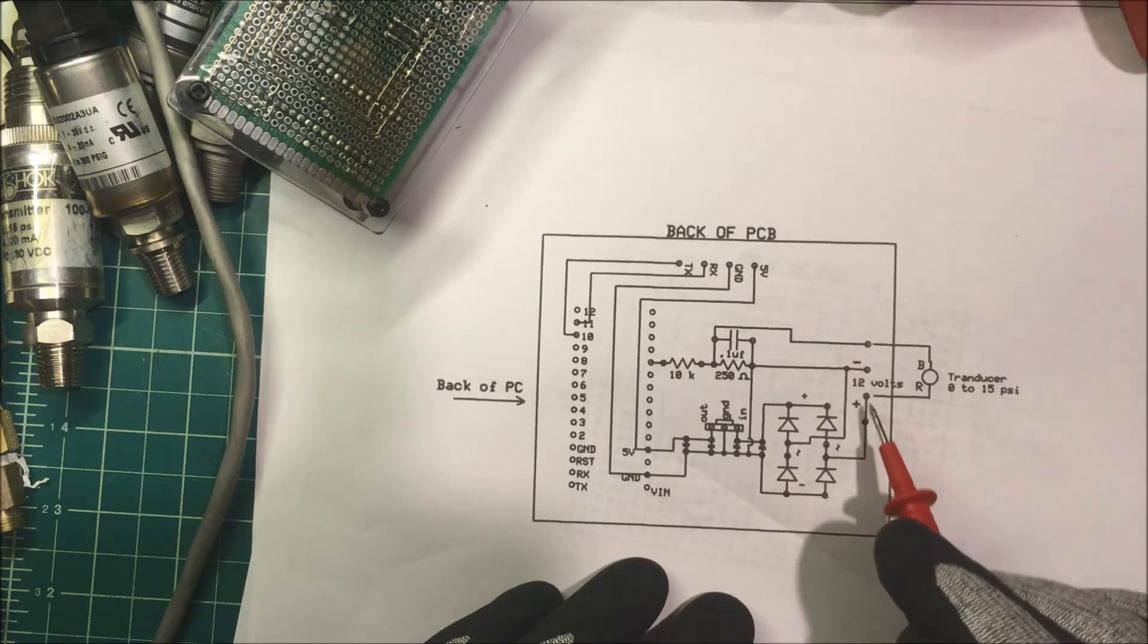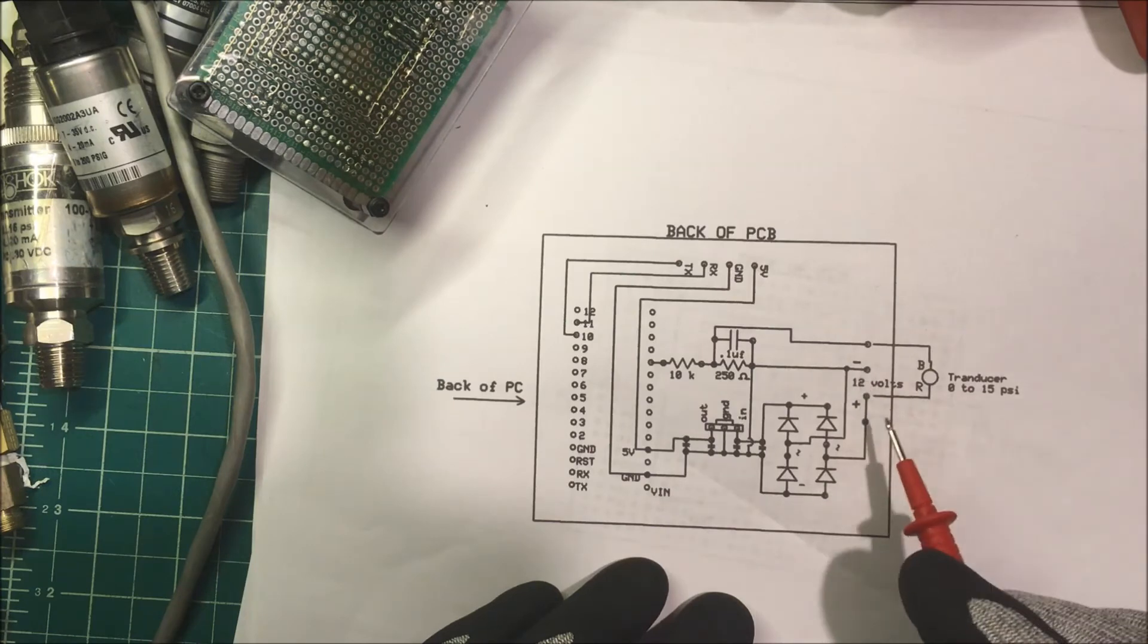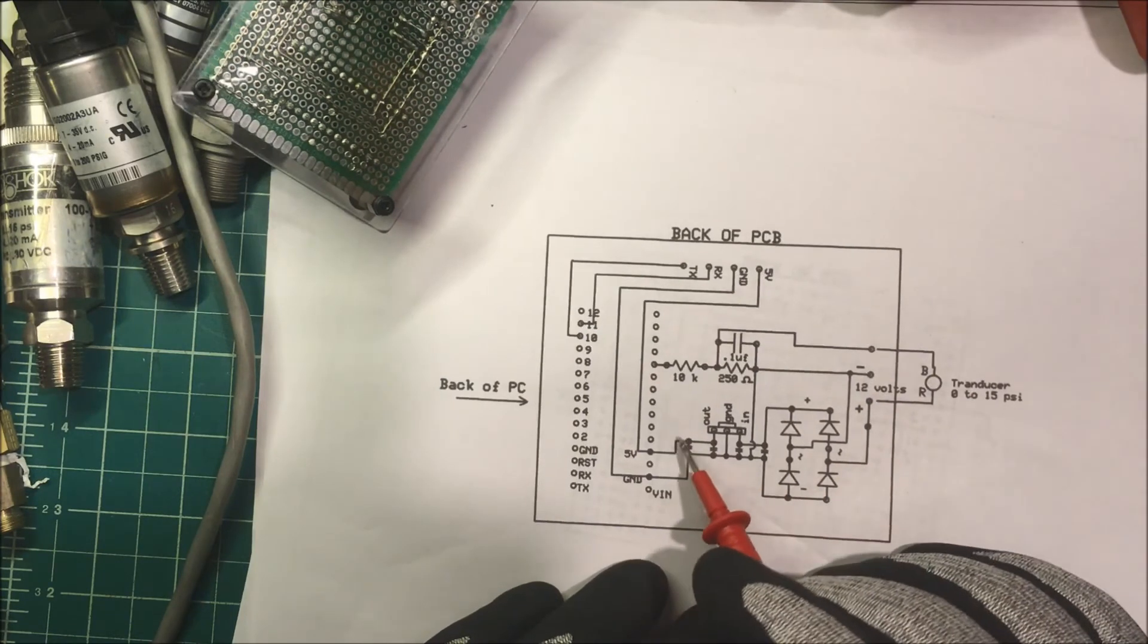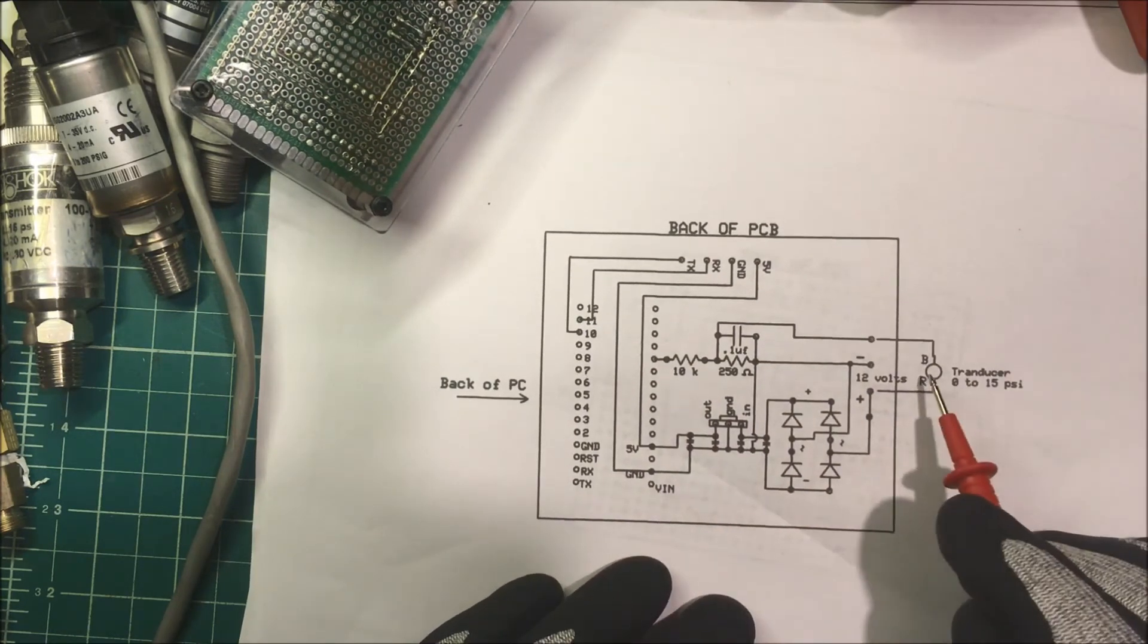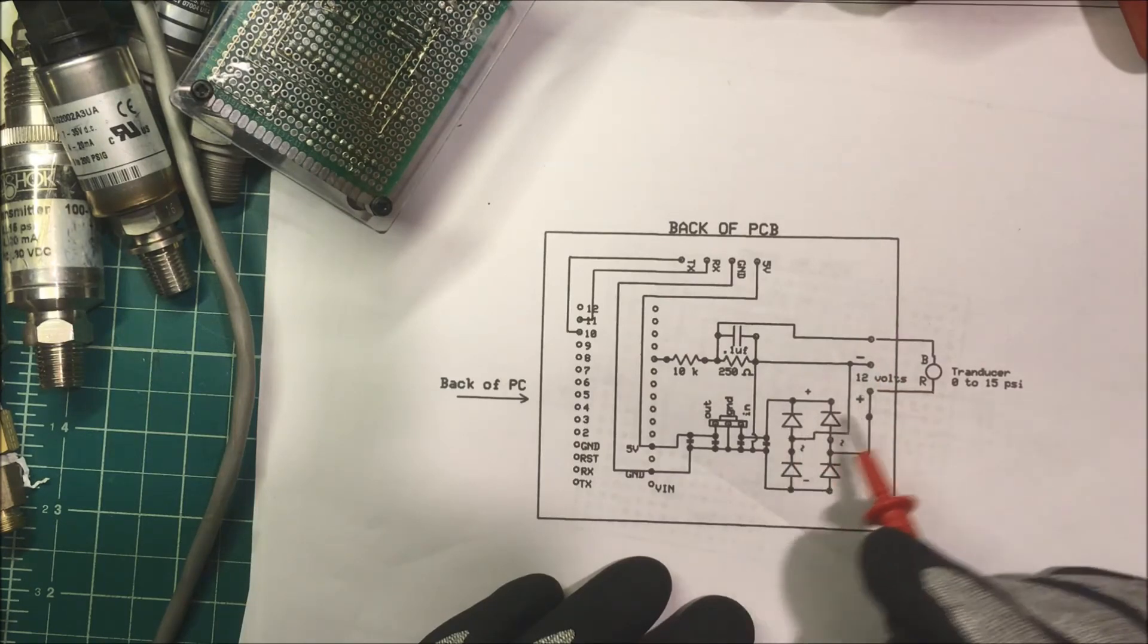I'm using a bridge rectifier so that if I mess up and I get the plus or minus wrong, I won't wreck my Arduino here. I might even take the transducer, the positive off the transducer and take it off of this side over here.